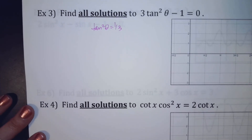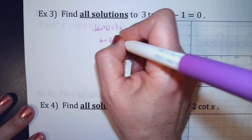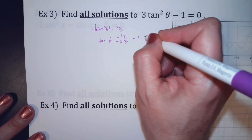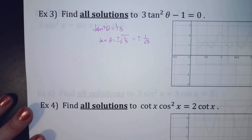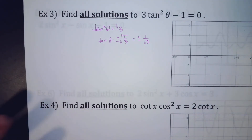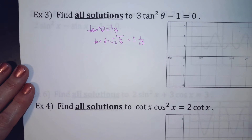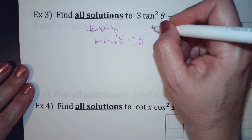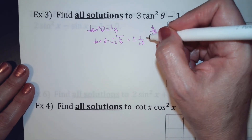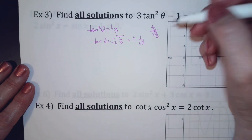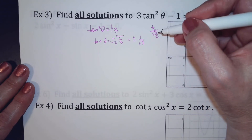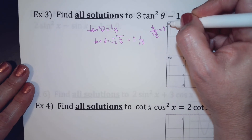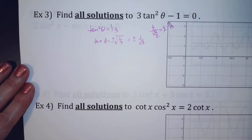Once you're there, take the square root of both sides, so tangent equals plus or minus the square root of 1/3, which is plus or minus 1 over square root of 3. You have to think about where this comes from — it comes from having 1/2 over radical 3 over 2. Because tangent is y over x, this was the x and that was the y.